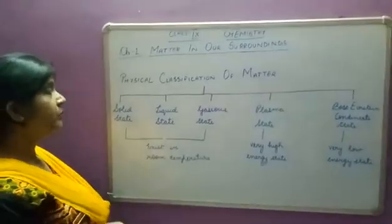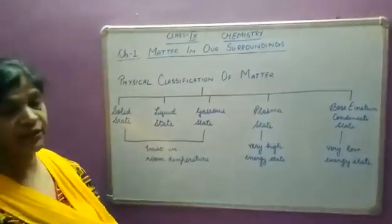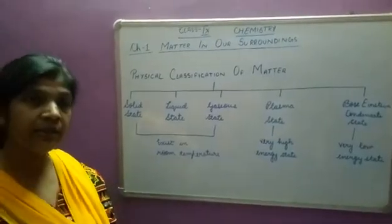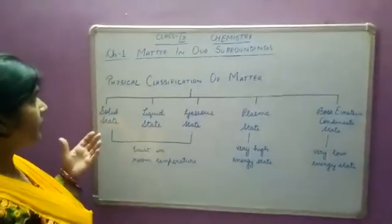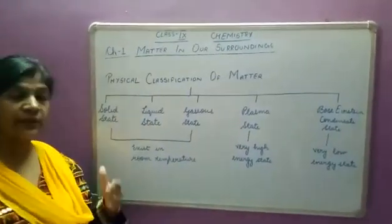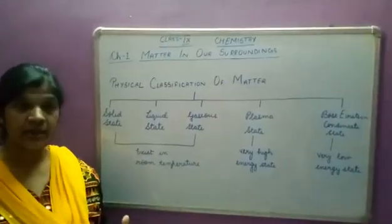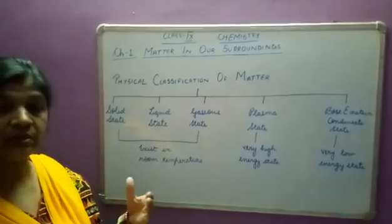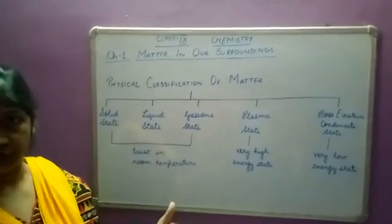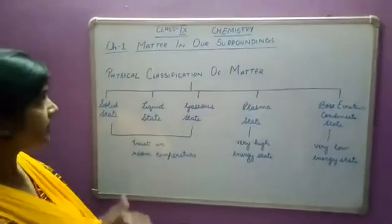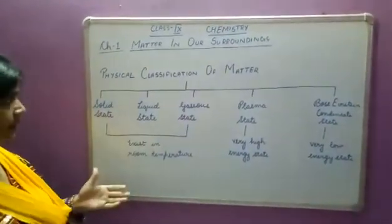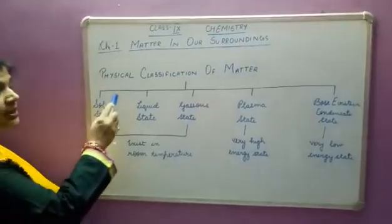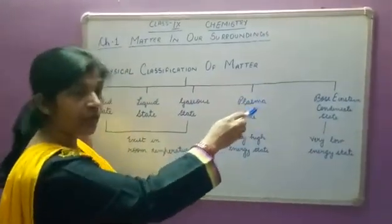Now we will study about the classification of matter. Matter can be classified on the basis of physical state and also on the basis of chemical composition. In this chapter, we will discuss about physical classification of matter.